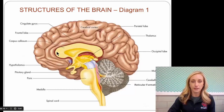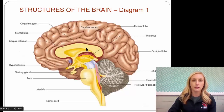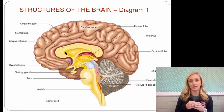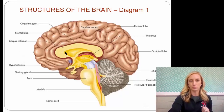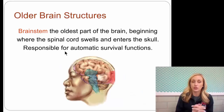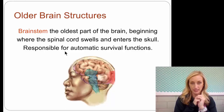Up at the very top — this is kind of difficult to see unless it's in a 3D brain — is the corpus callosum, which is the fibers that connect the two sides of the brain, the two hemispheres. We're going to talk more about that soon. Here's more in-depth information on the older brain structures like the brain stem.